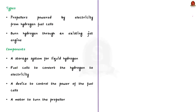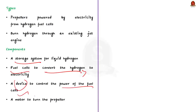Modern hydrogen planes can broadly be split into two types: those that use propellers powered by electricity from hydrogen fuel cells, and those that burn hydrogen through an existing yet modified jet engine. Aesthetically, most hydrogen planes will be similar to traditional ones, except longer to accommodate the larger liquid hydrogen fuel tank. Propeller-powered hydrogen planes will have four main components: a storage system for liquid hydrogen, fuel cells to convert hydrogen to electricity, a device to control the power of the fuel cells, and a motor to turn the propeller. Hydrogen planes can be either manned or unmanned, such as hydrogen-powered high-altitude platforms.